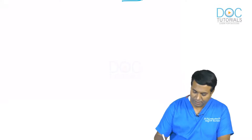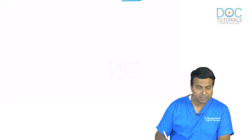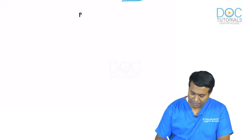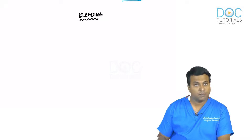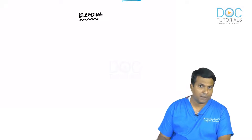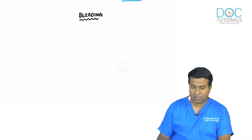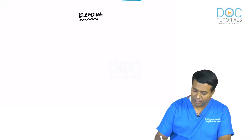Let me discuss the complications one by one. Starting with the bleeding complication — bleeding is the most common complication and the most common cause of death in duodenal ulcers.